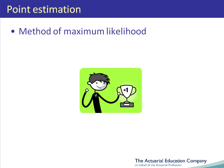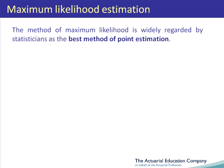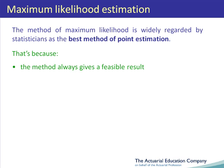In this unit, we will describe the method of maximum likelihood. The method of maximum likelihood is a way of estimating the value of an unknown parameter. This method is widely regarded as the best method of point estimation. One of those reasons is that the method will always give you a feasible result — this isn't always the case with the method of moments.